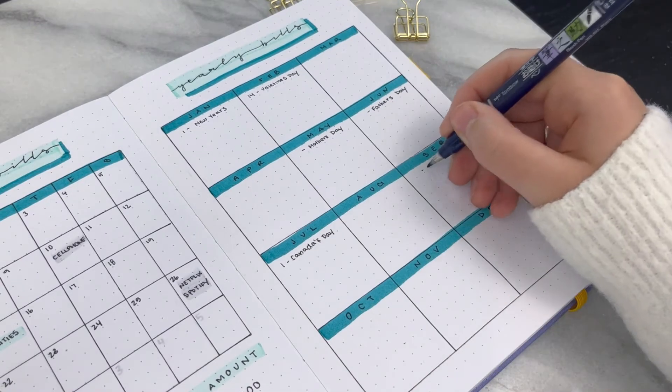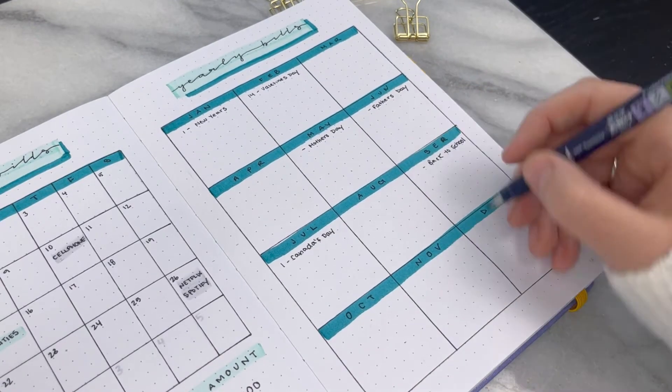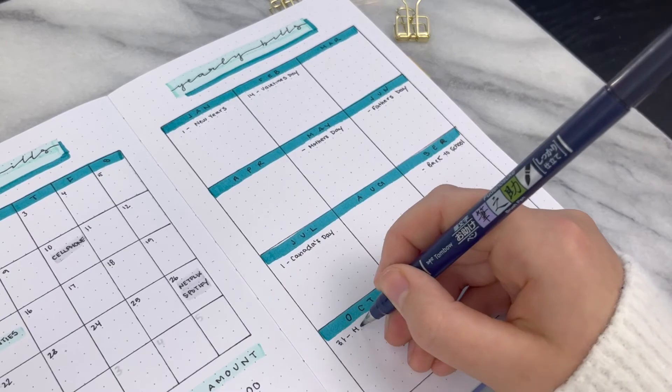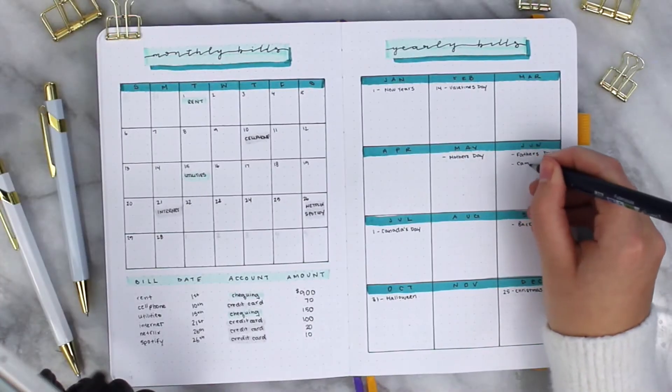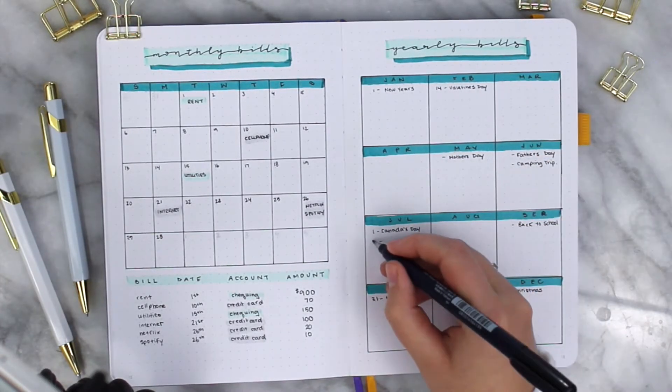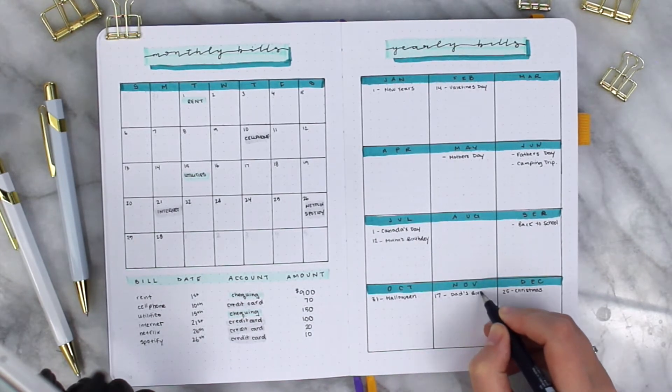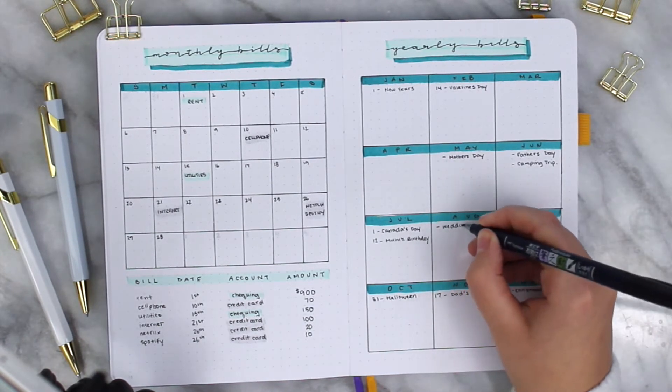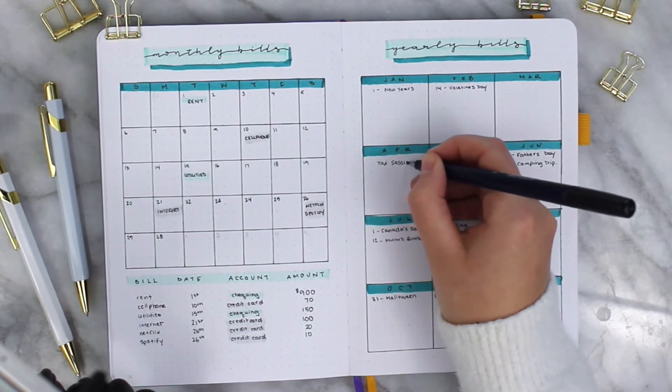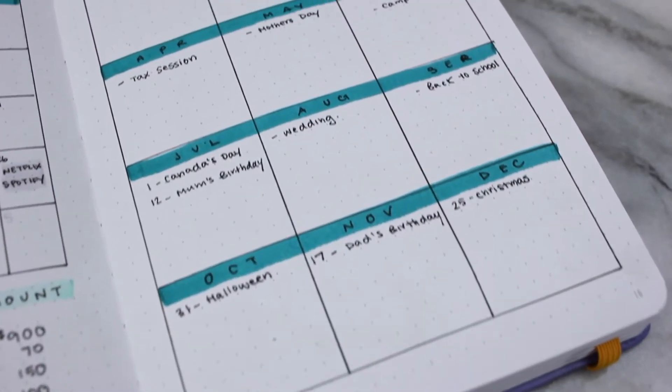But also when you are planning out and figuring out how to record your finances using your journal, make sure you also consider things like birthdays or you have a wedding or a camping trip, other events that will happen throughout the year that you will need to consider in your budgeting or your financial awareness throughout the year.